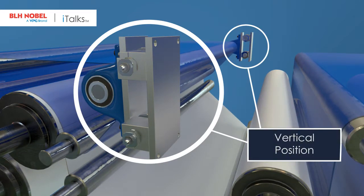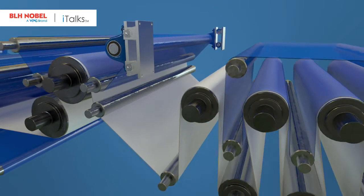Because the FMU works in any orientation, it can be mounted in the most optimal position, even vertically, for a given paper machine.